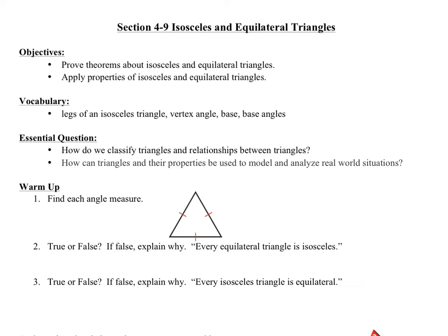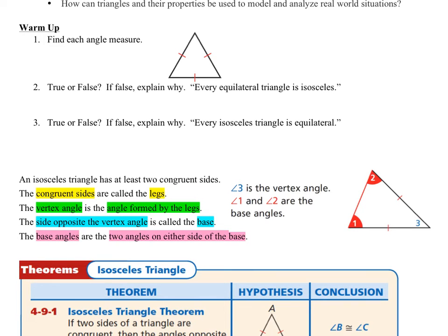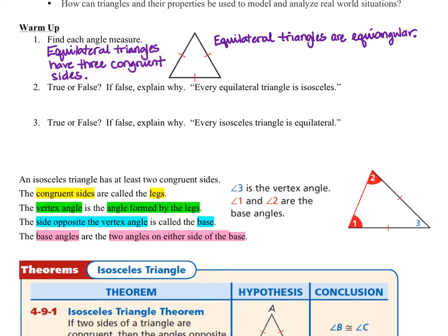Let's take a look at our first warm-up question. Number one says find each angle measure, and we have a figure. The figure shows a triangle with three congruent sides, as we can see from the tick marks, which means this is an equilateral triangle. Equilateral triangles are also equiangular, meaning they have three congruent angles. By the triangle sum theorem, interior angles add up to 180 degrees, so 180 divided by 3 means every angle measures 60 degrees.